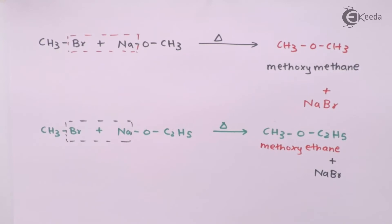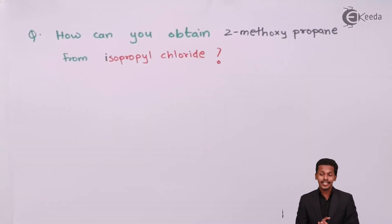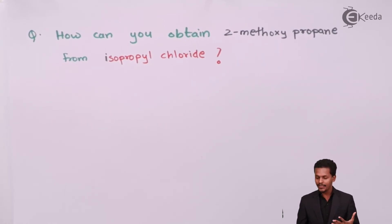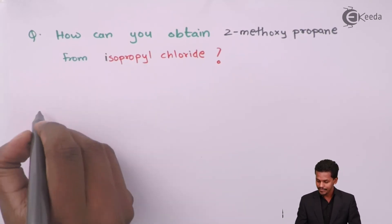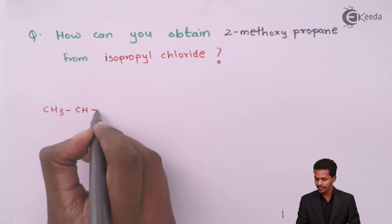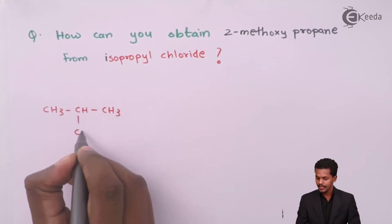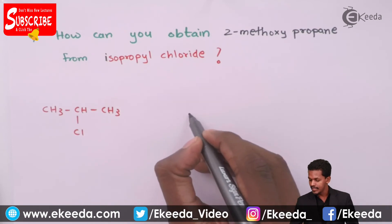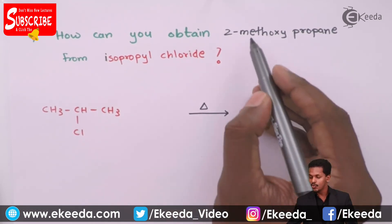Now let me give a few questions related to this. The question is: how can you obtain 2-methoxypropane from isopropyl chloride? We have to obtain an ether, and when it comes to the preparation of ether from an alkyl halide it is basically Williamson synthesis. So we have to prepare an ether from isopropyl chloride. Let us draw the structure of isopropyl chloride and also the structure of 2-methoxypropane.